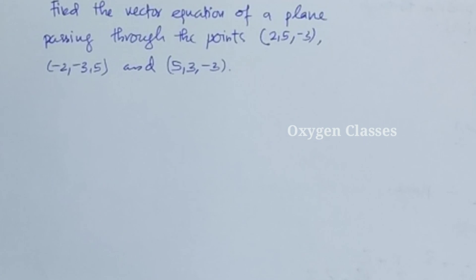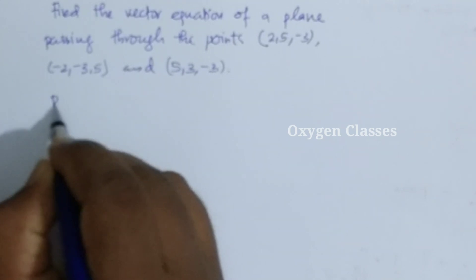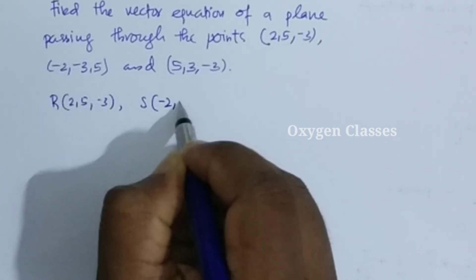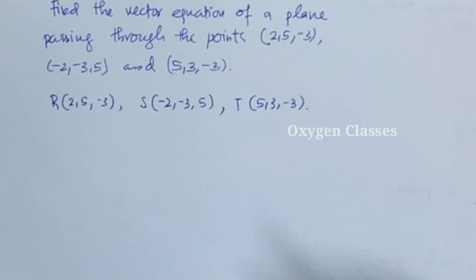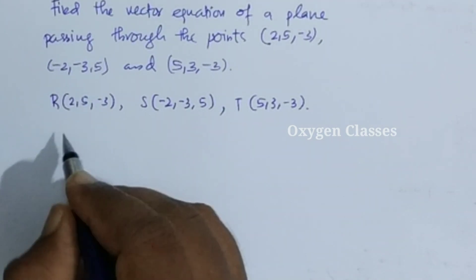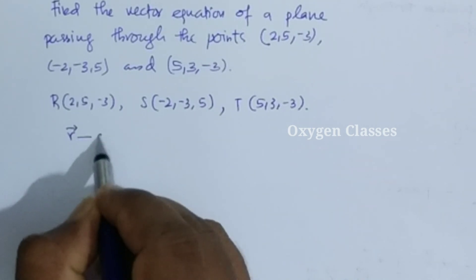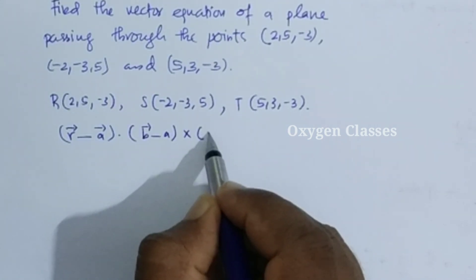Example: Find the vector equation of the plane passing through the points (2, 5, -3), (-2, -3, 5), and (5, 3, -3). We call these R = (2, 5, -3), S = (-2, -3, 5), and T = (5, 3, -3). The vector equation of the plane is: (R minus A) dot [(B minus A) cross (C minus A)] = 0.